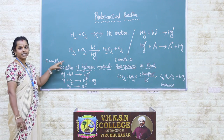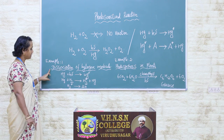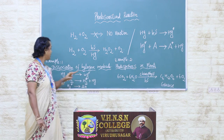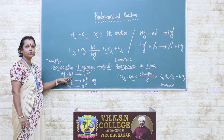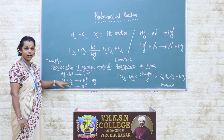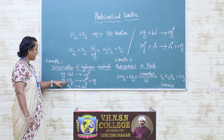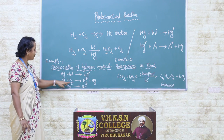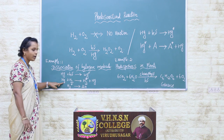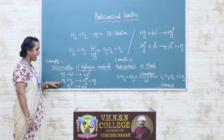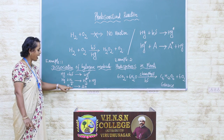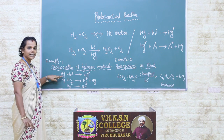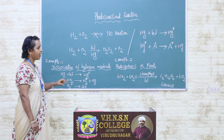One example of a photosensitizer reaction is the dissociation of hydrogen molecules. UV light is unable to dissociate hydrogen molecules because hydrogen molecules do not absorb the radiation. However, if a small amount of mercury vapour is added, the dissociation of hydrogen takes place. Here, mercury vapour acts as a photosensitizer.